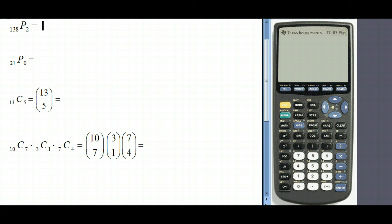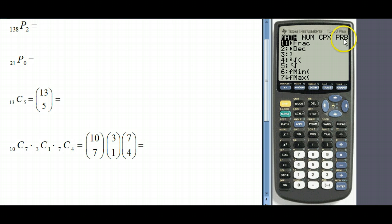So now let's get into the actual computation of this. Let's say we want to evaluate the permutation of 138 things taken two at a time. If we go to our calculator here, how we get to these particular functions is to hit the math button. From here we need to go to PRB which means probability.